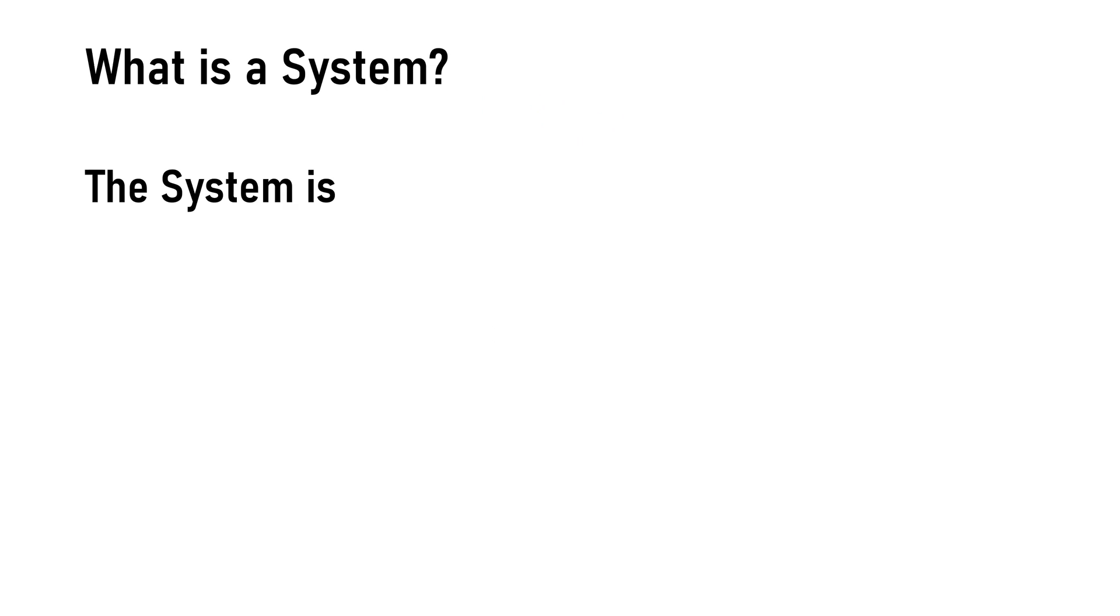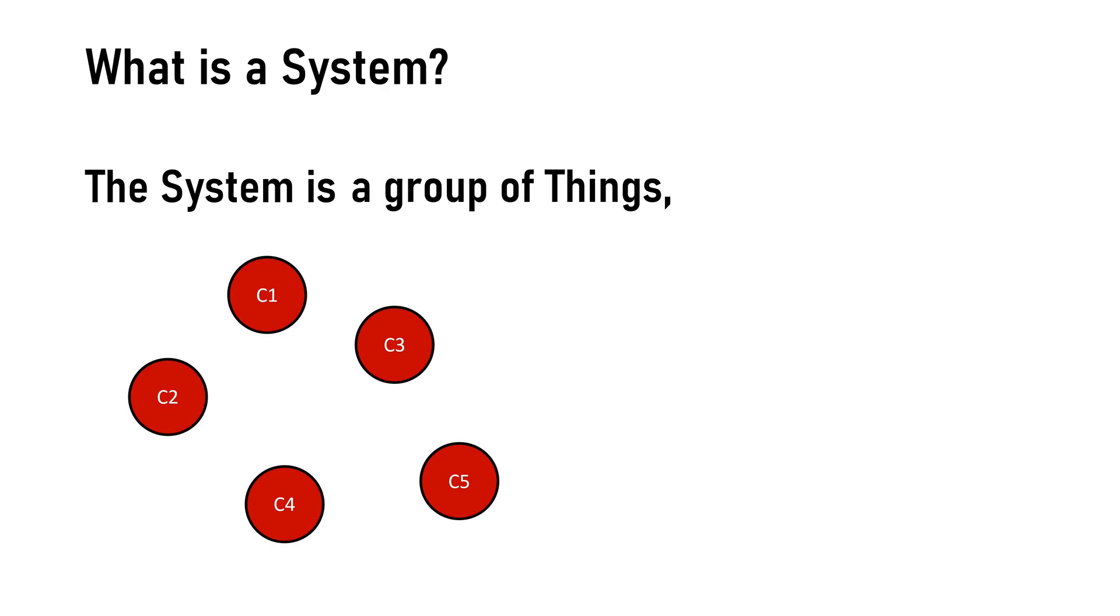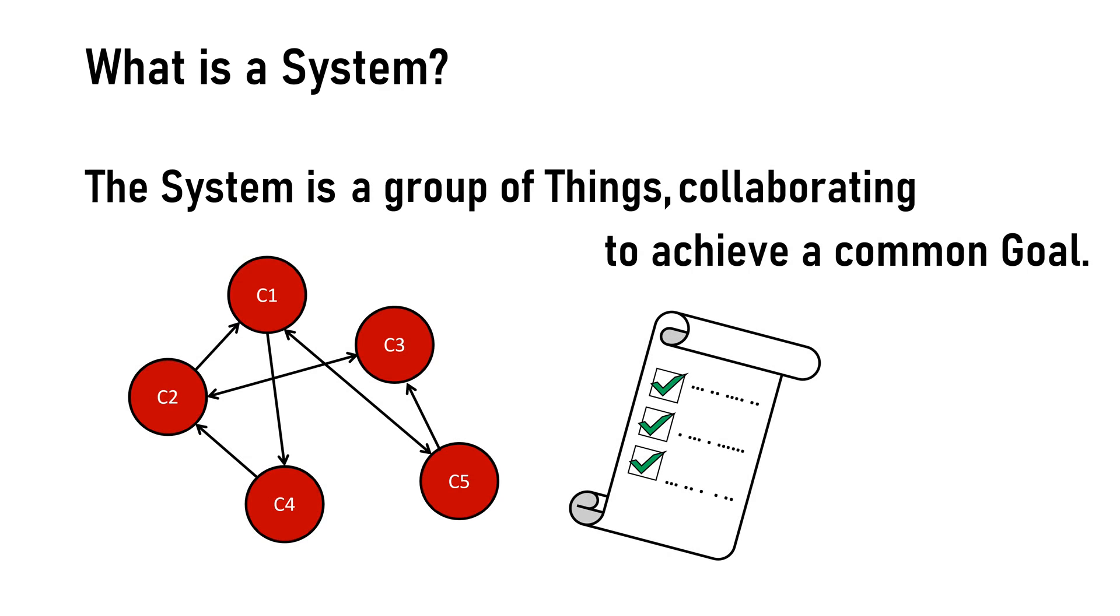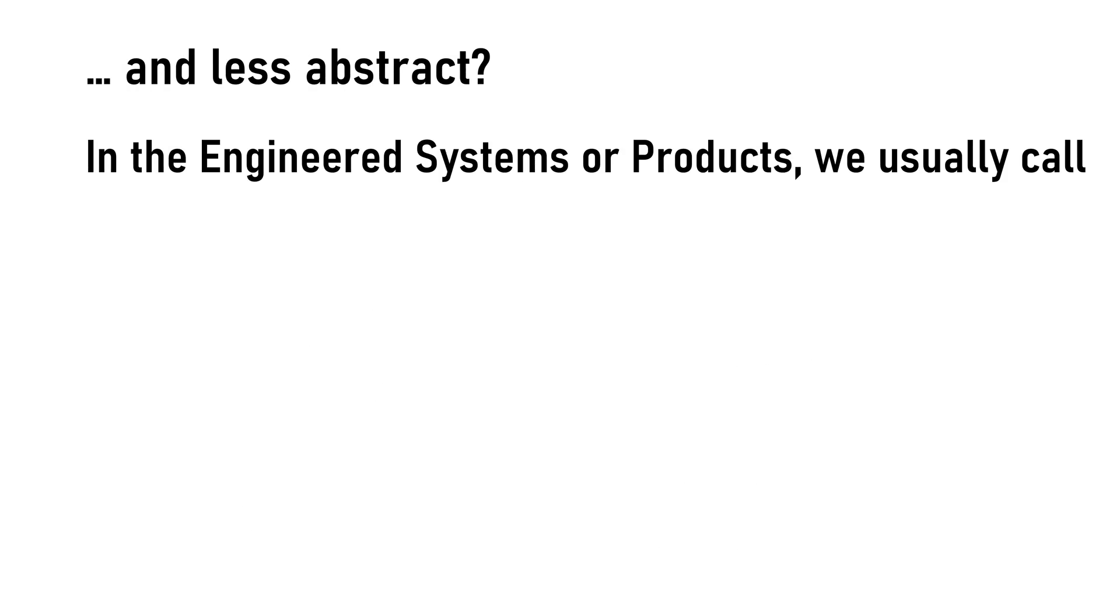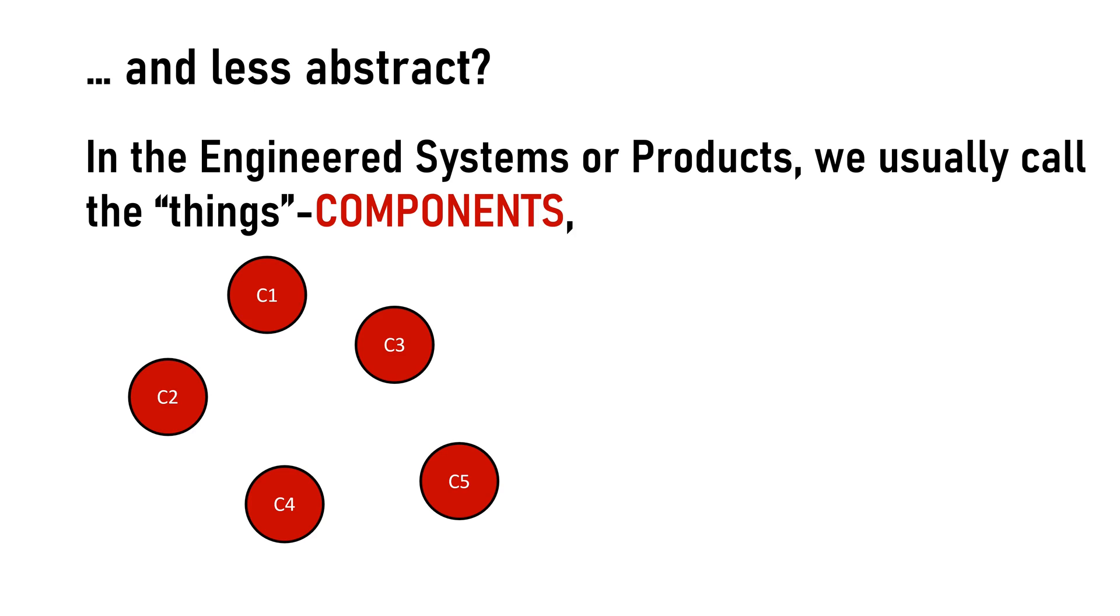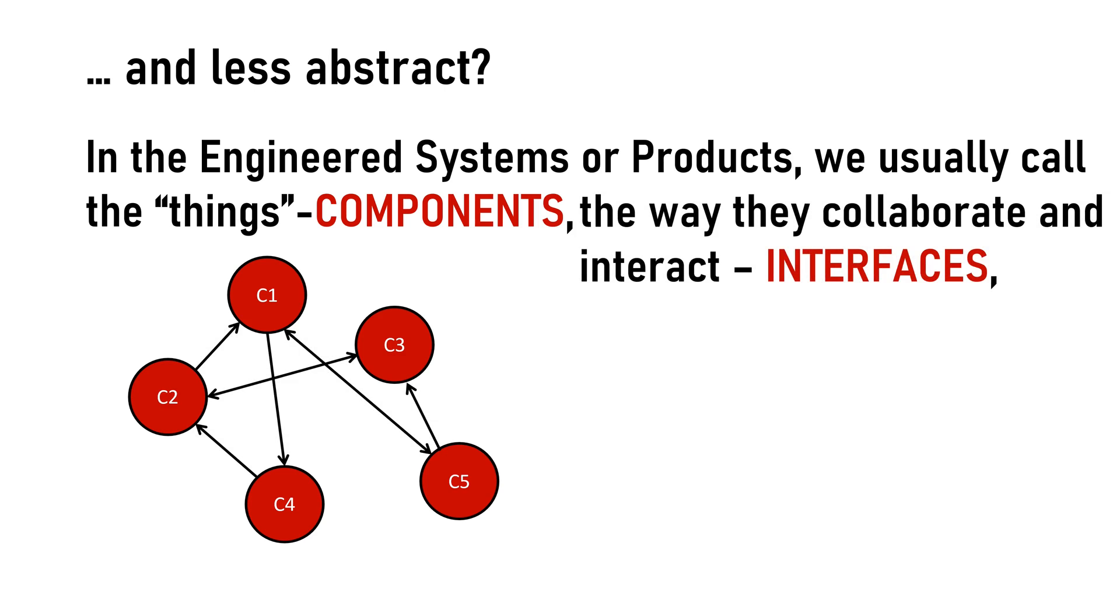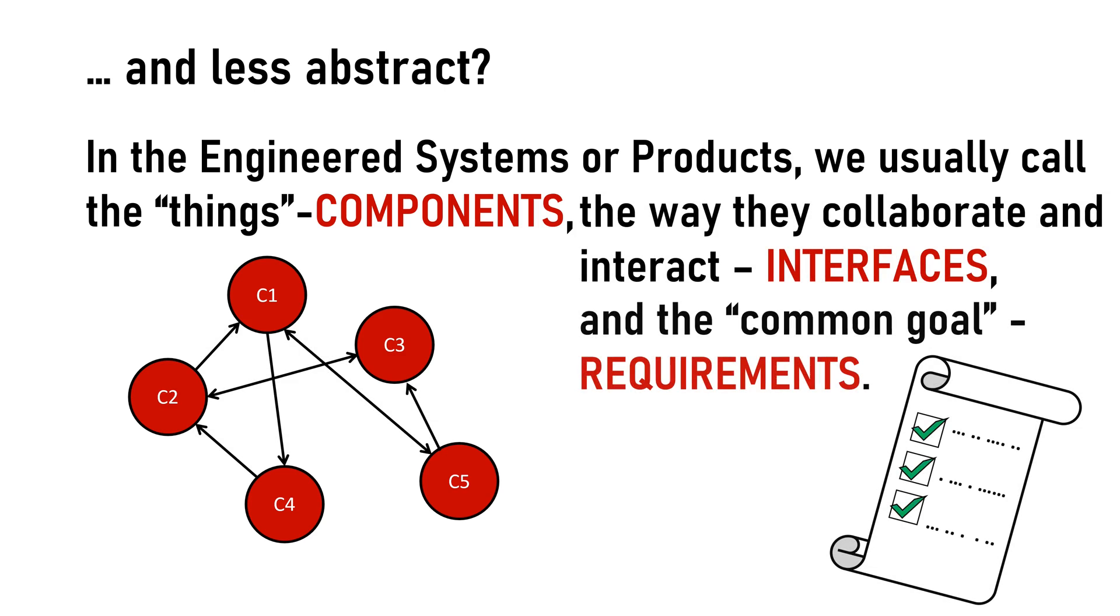Let's start with a generic definition of system. A system is a group of things collaborating to achieve a common goal. In engineering we usually call the things components, the way they collaborate and interact interfaces, and the common goal as a set of requirements.